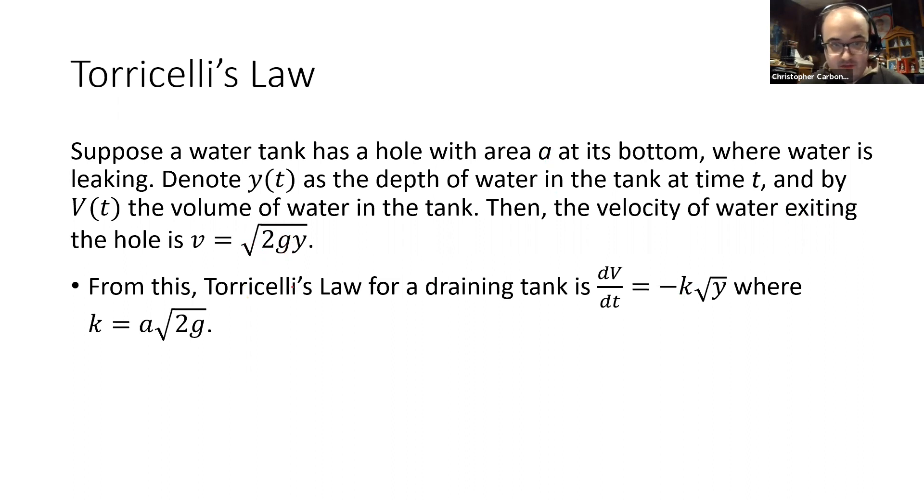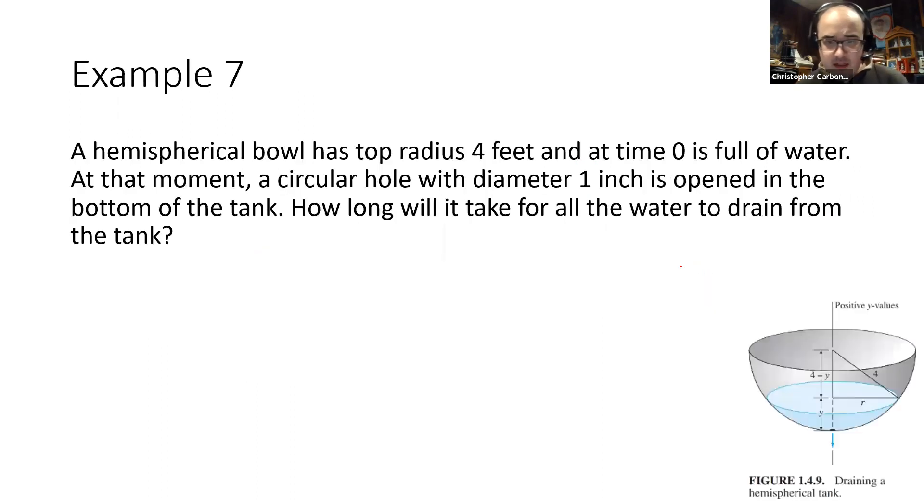From this, Torricelli's Law for a draining tank is the derivative of that volume with respect to time equals negative k times the square root of y, where k is defined as a times the square root of 2 times g, again that gravitational constant. And we were going to look at this, but I did not want to accidentally start writing things that were not going to make sense.